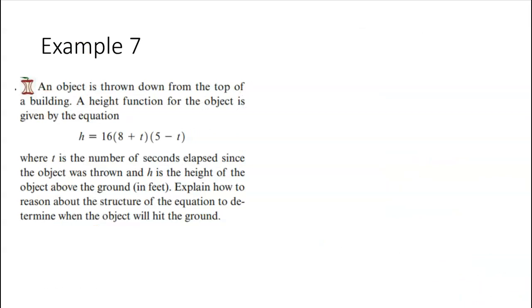So an object is thrown down from the top of a building. A height function for the object is given by this equation, where t is the number of seconds elapsed since the object was thrown, and h is the height of the object. Explain how to reason about the structure of the equation to determine when, okay, so that's a time question, the object will hit the ground. Okay, what does it mean if something hits the ground? What would the height be? Well, the height would be zero if it's at the ground. So what this is asking is when will this be zero?